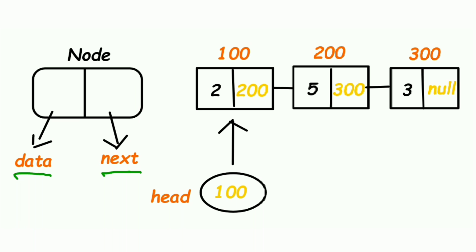The next pointer points to the next node of the linked list. In this example, 2 is the value and 200 is the pointer to the next node. Then 5 is a value and 300 is a pointer to the next node — that's the address of the next node. 3 is the value for the last node, and since there is no more node available, it has null as its pointer. The head points to the starting of the linked list — the first node is held by the head.